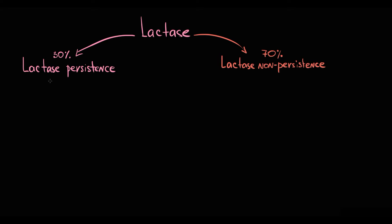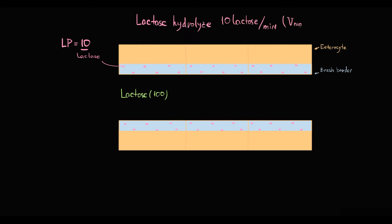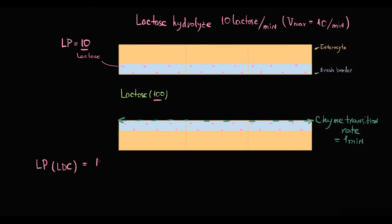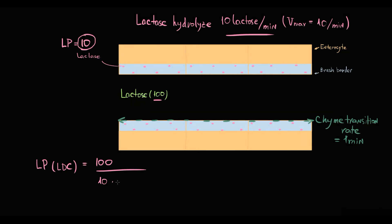Adults with lactase non-persistence can hydrolyze lactose, but only in small quantities, because they have limited lactose digestion capacity. To illustrate this: suppose 100 lactose molecules enter the small intestine, and a lactase-persistent individual has 10 lactase enzymes, where 1 lactase enzyme can hydrolyze 10 lactose molecules per minute, and the transit rate through the small intestine is 1 minute. Lactose digestion capacity equals the amount of substrate (100 molecules) divided by the capacity of 1 lactase enzyme (10 molecules per minute), multiplied by the quantity of enzymes (10). In this case, it takes 1 minute to hydrolyze all 100 lactose molecules.